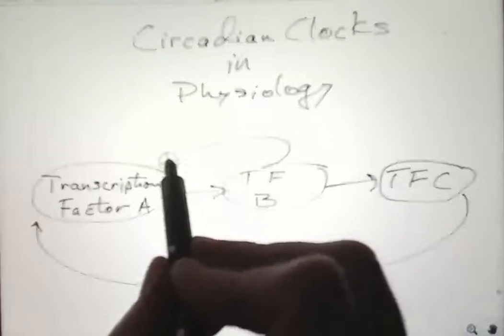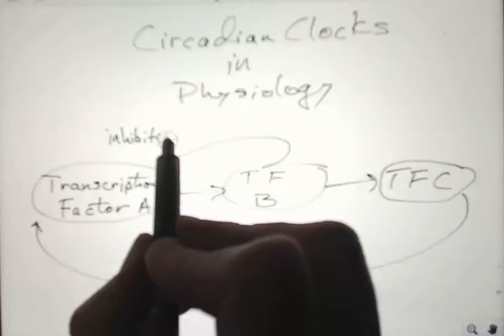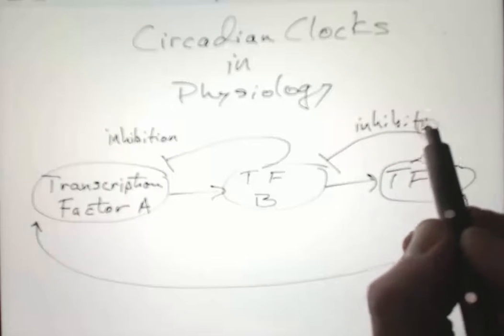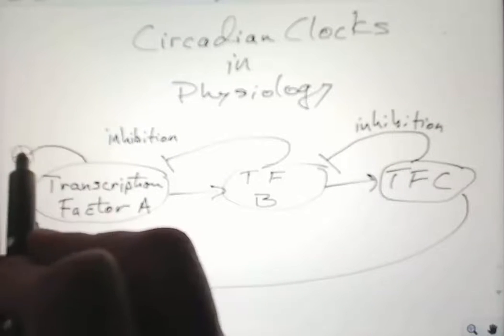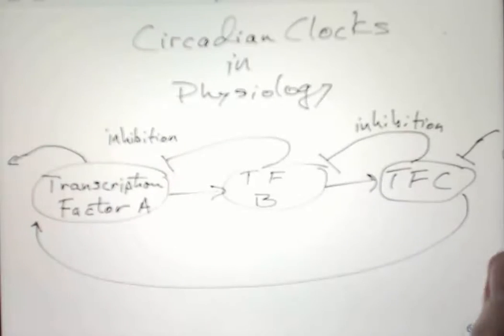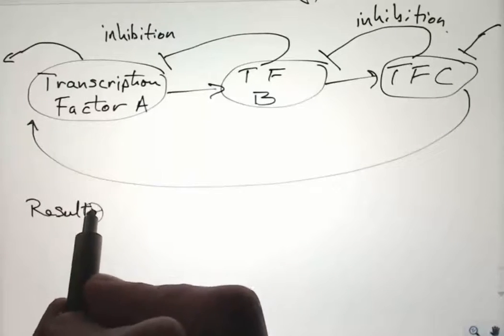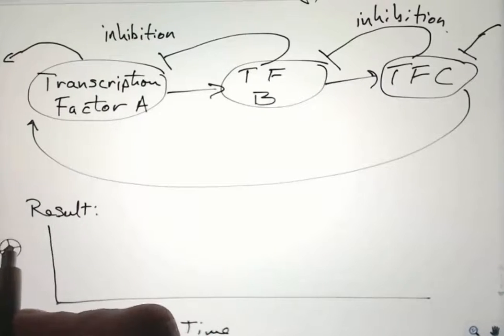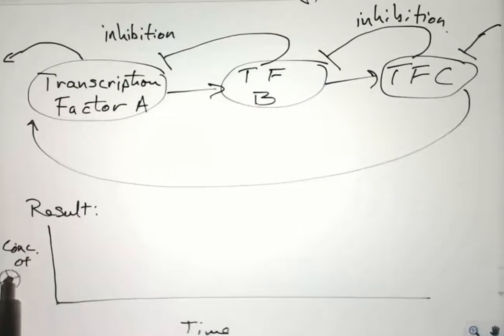Transcription factor A stimulates and enhances production of transcription factor B, which enhances production of transcription factor C. Each transcription factor inhibits the earlier transcription factor. In other words, transcription factor A will bind to the gene for transcription factor B and enhance production of messenger RNA, causing production of transcription factor B and inhibiting itself.